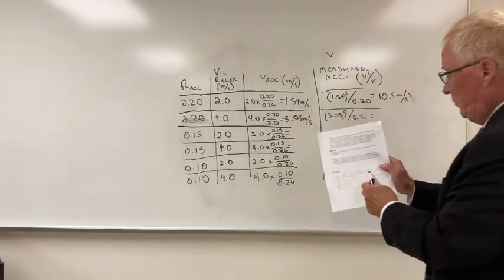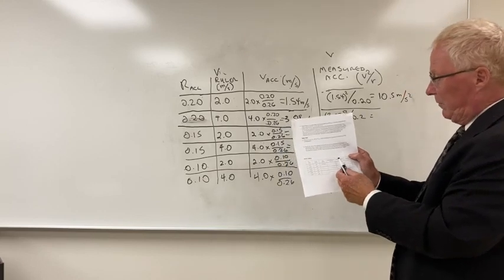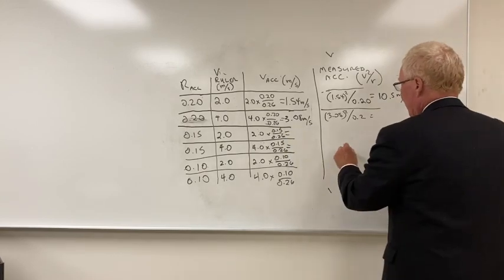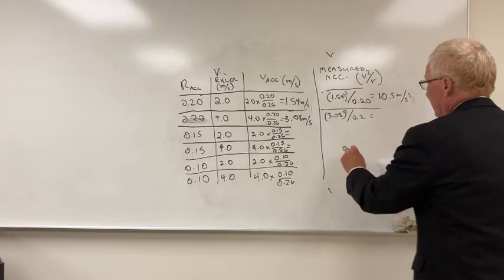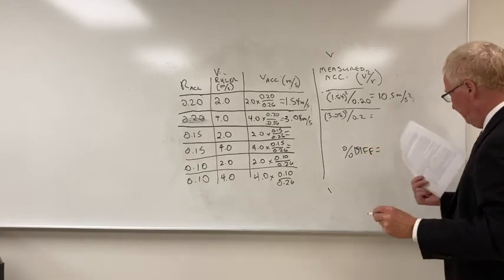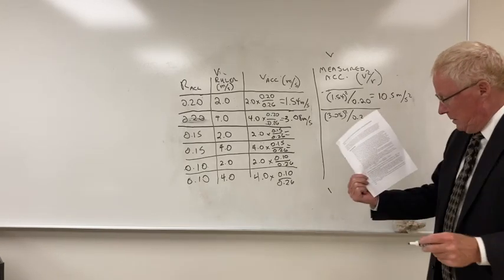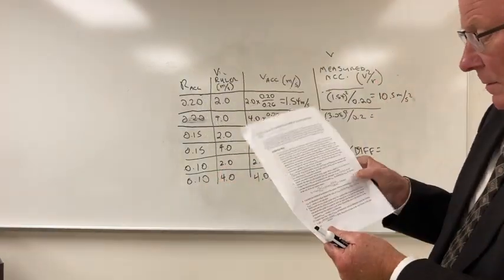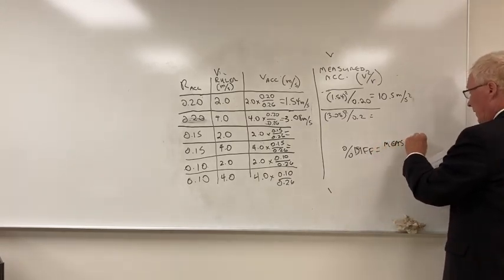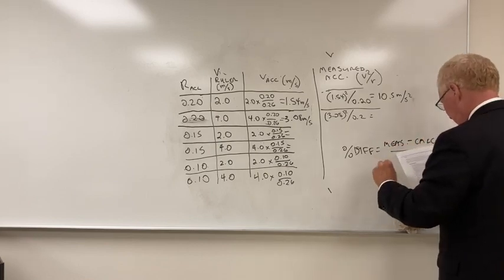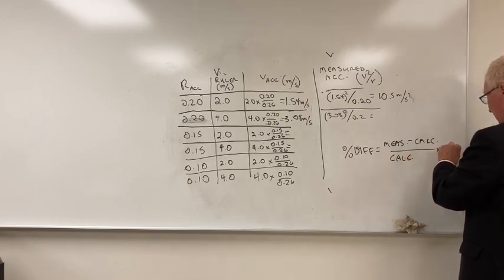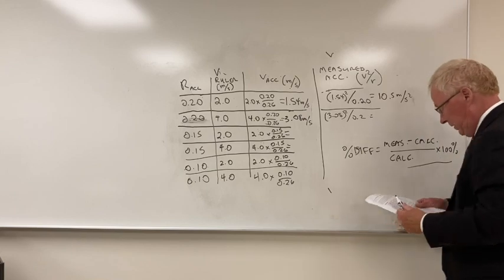Then compare that to your estimated acceleration from the top graph in the screenshot, which will be on the main handout link. And then you get a percent difference. Percent difference will be, any time you have it, will be given by measured minus calculated, divided by calculated, times 100. And then just answer the questions there.